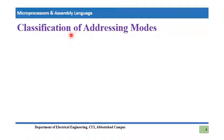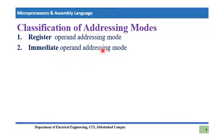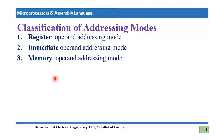There are different ways by which we can access operands, and based on these ways we have three major classifications of addressing modes: register operand addressing mode, immediate operand addressing mode, and memory operand addressing mode. We are going to deal with them one by one.